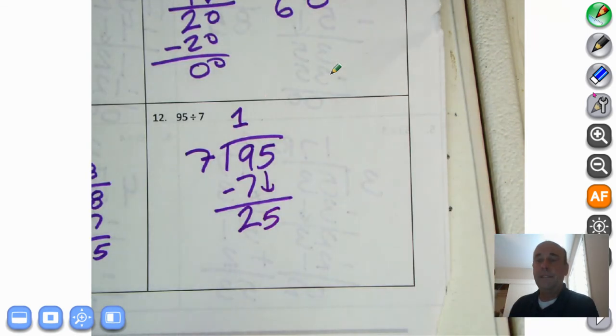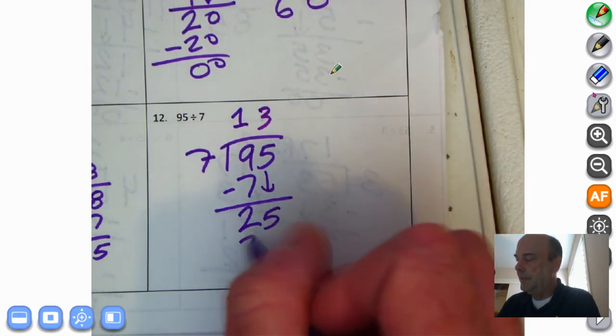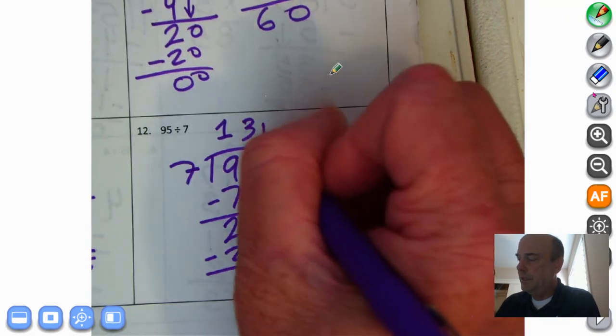7 times 1 is 7. 7 times 2 is 14. 7 times 3 is 21. 7 times 4 is 28. So it can't be greater than 3. And 7 times 3 is 21. We subtract. 5 minus 1 is 4. 2 minus 2 is 0. Looks like it's 13, remainder 4.